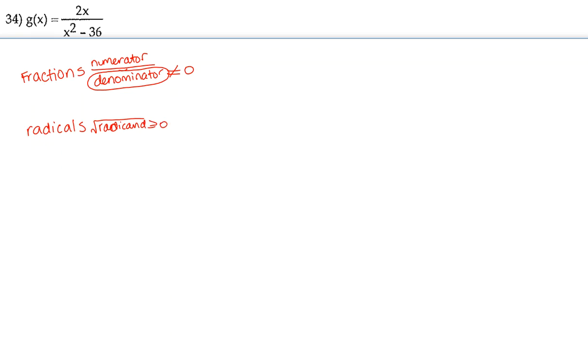So in this example, 2x over x squared minus 36, the x squared minus 36 cannot equal 0. So we're solving for x, but we're solving for x because those are going to be the values that we can't plug into this function. So those are going to be the values that are not in our domain.